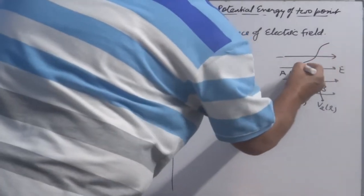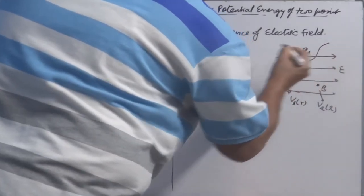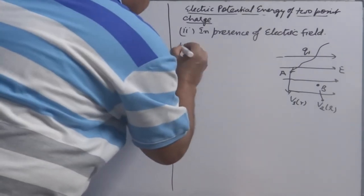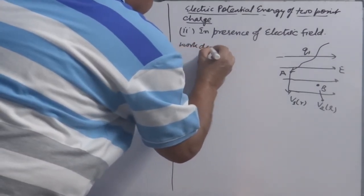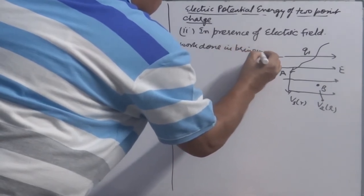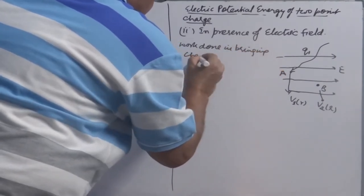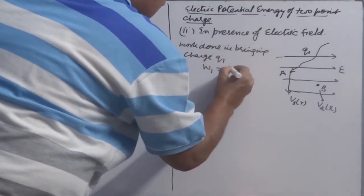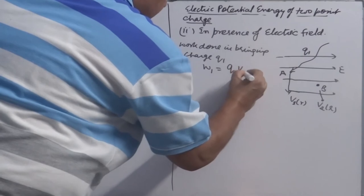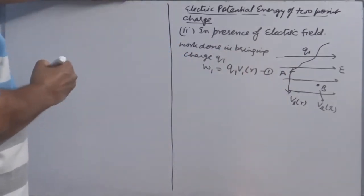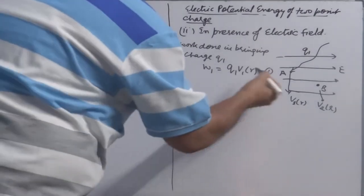Now, first I bring charge Q1 and place that at A. The work done in bringing charge Q1, W1 is equal to Q1 V1R. Because already there is a potential, there is an electric field, so you have to work.